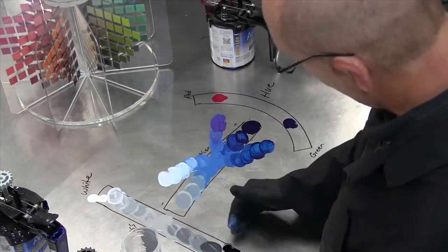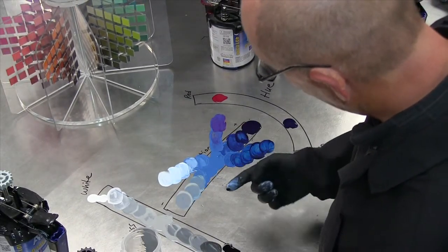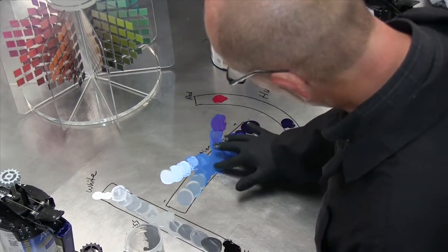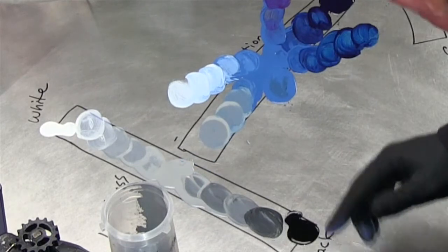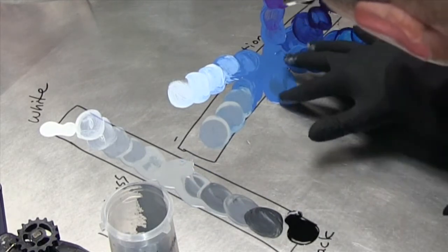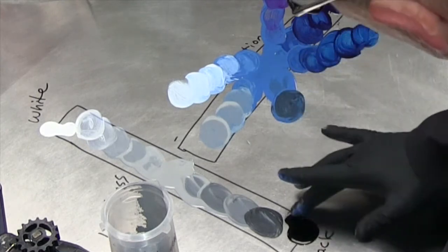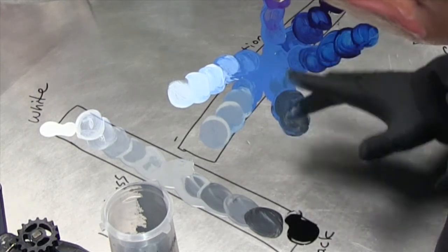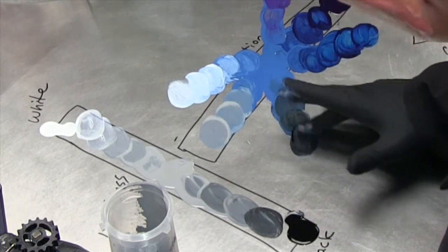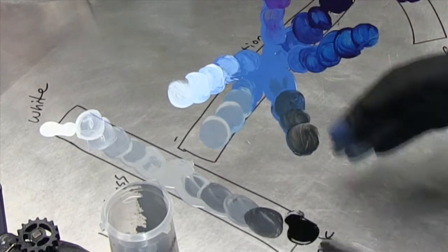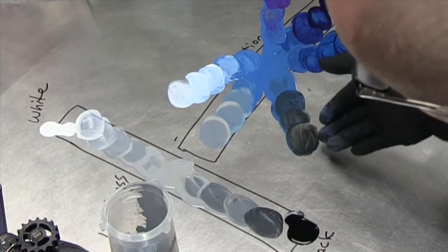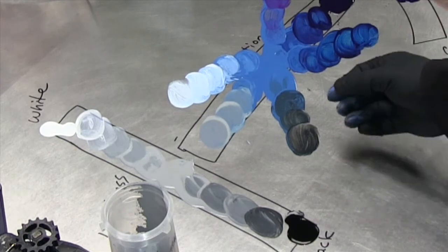If we want to desaturate and darken it, we would add black. It doesn't take very much black at all to affect this color. So now what you're seeing is it's getting very dirty looking. It's making it darker, and darker, and darker. In just that little bit of time, we've moved it from blue all the way to looking black with just very little black.